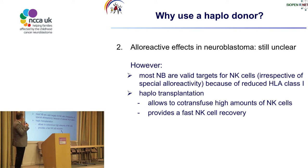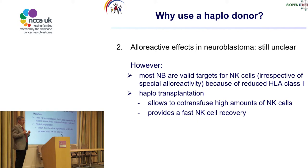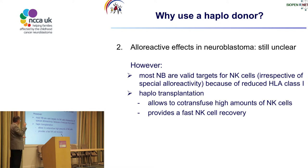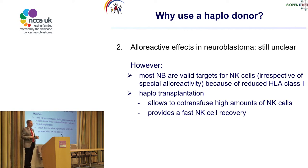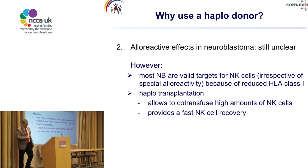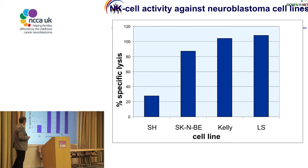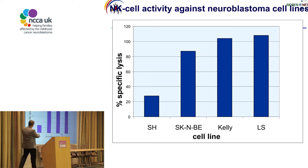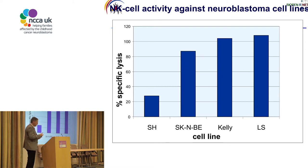Such alloreactive effects in neuroblastoma are still unclear. However, most neuroblastoma cell lines are per se valid targets for NK cells because many of them have a so-called reduced HLA Class I expression. After haplo transplantation, high amounts of NK cells can be co-transfused at day zero from the donor, providing fast NK cell recovery afterwards. Several neuroblastoma cell lines can be killed very effectively by NK cells — three cell lines can be lysed, one is not really susceptible, but most neuroblastomas are susceptible to NK cell lysis.